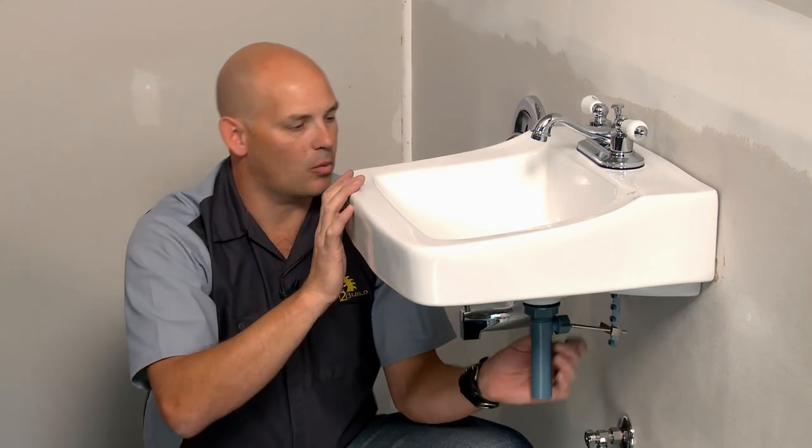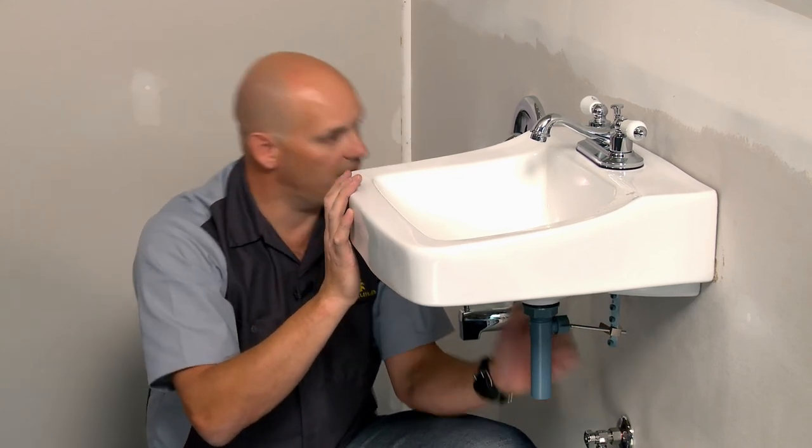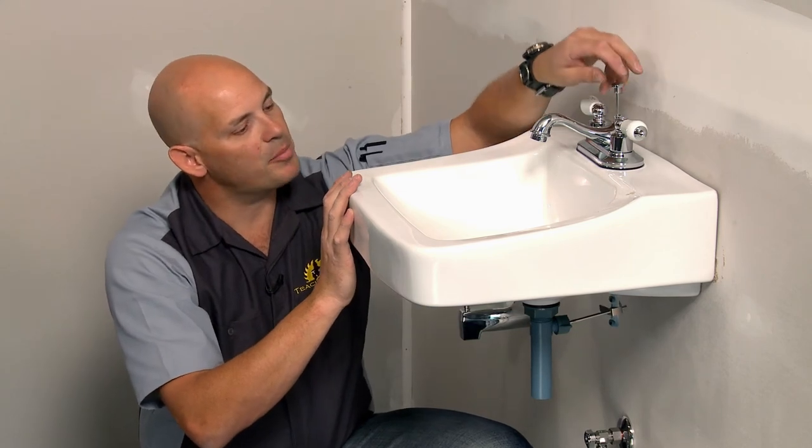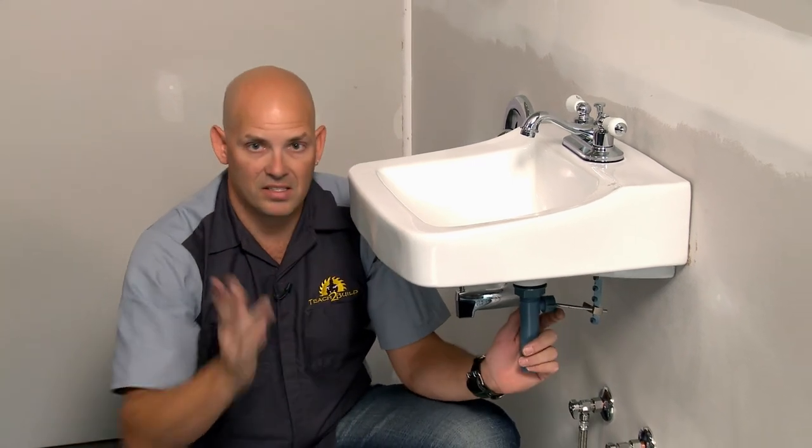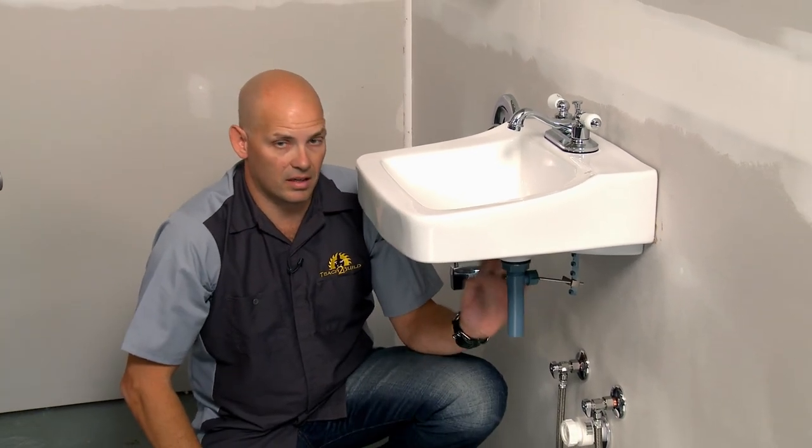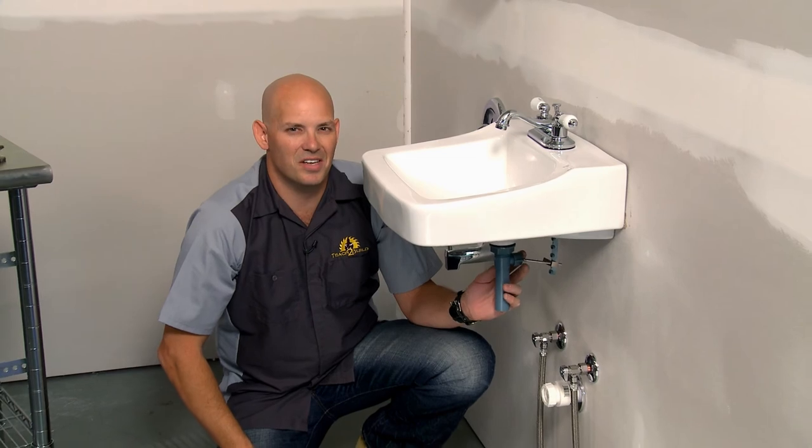Turn on the faucet, get a lot of water running, make sure you don't have any leaks here, and test the operation of the stopper. Make sure it'll fill up like you need, and then drain properly when it's open. And that's all it takes, not only to clear a clog from your stopper, but to get it adjusted properly.